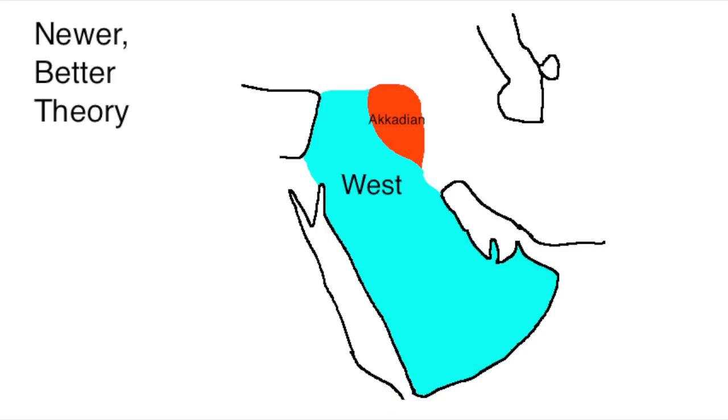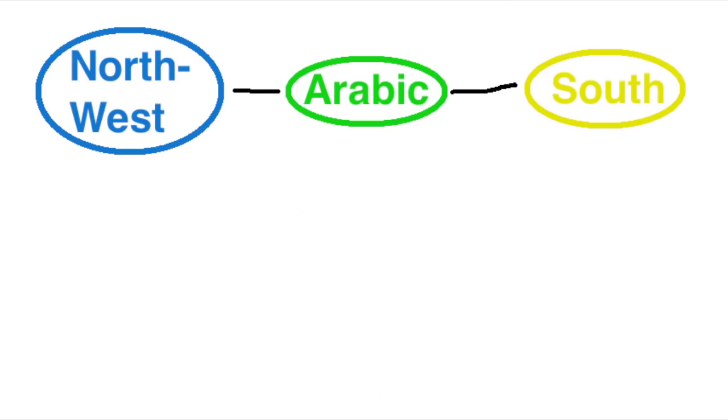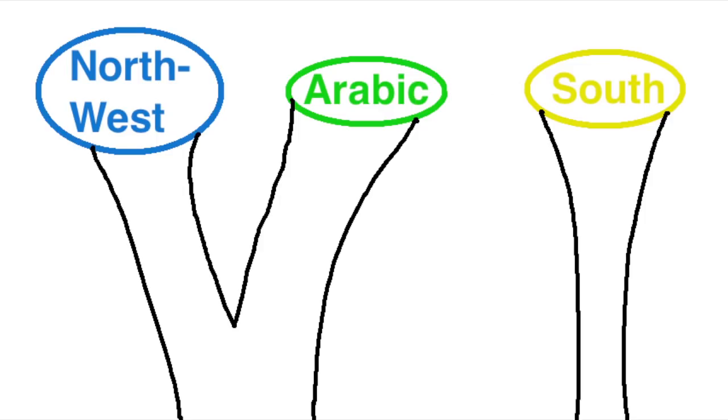The newer, more popular theory, however, is that the West Semitic languages diverged into the South Semitic languages and the Central Semitic languages, with the Central Semitic languages then branching into Arabic and the Northwest Semitic languages. The big problem comes from the fact that Arabic has a lot of stuff in common with both the Northwest Semitic languages and the South Semitic languages, and linguists disagree on which of the similarities are there because they share a common ancestor and which are there because they spread from one to the other after they split off.